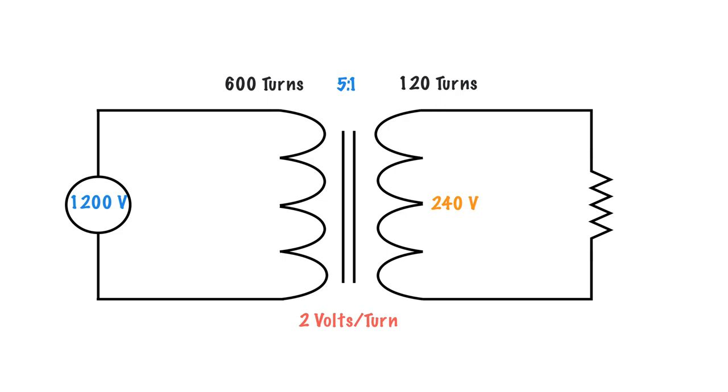Now myself, I find that can get a little confusing because we won't always be given the turns. So we'll generally be given voltage or current or VA or all of those. So using the volts per turn method might not always work for us. So that's where we come into the turns ratio using this 5 to 1 ratio.